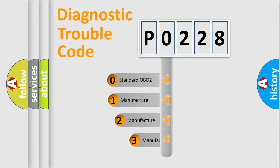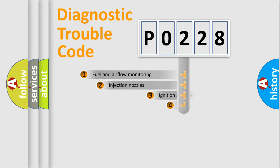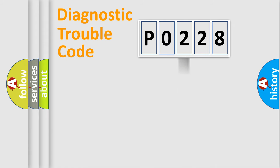If the second character is expressed as zero, it is a standardized error. In the case of numbers 1, 2, 3, it is a manufacturer-specific error. The third character specifies a subset of errors. The distribution shown is valid only for the standardized DTC code.